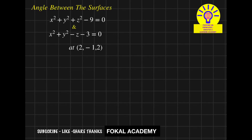Hi everyone, welcome to Focal Academy. Seeing this problem, here two surfaces are given. So this is surface 1 equation and this is surface 2 equation. So between these two surfaces, how to find an angle at a point — this is the problem.